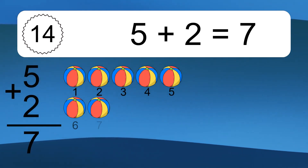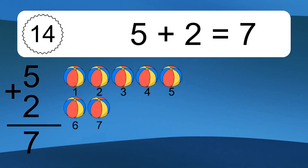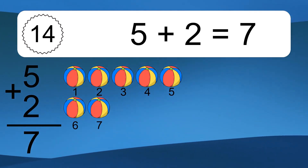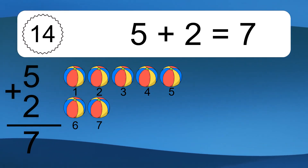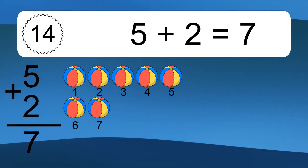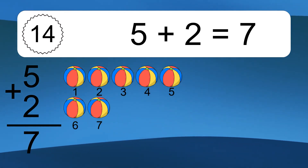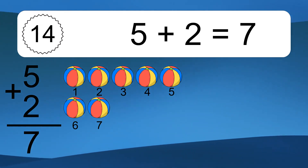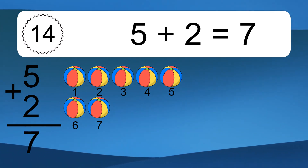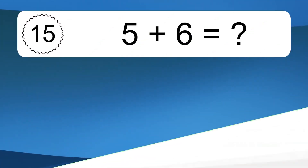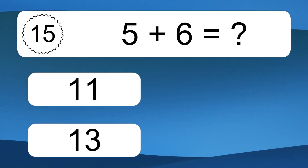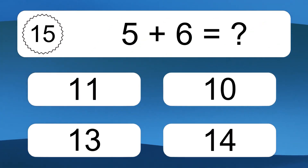5 plus 2 equals what? 5 plus 2 equals 7. Let's count it. 1, 2, 3, 4, 5, 6, 7.